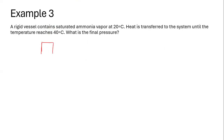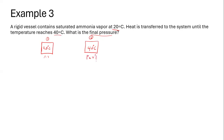In state number one the temperature was 20 degrees Celsius. After transferring heat into this system the temperature increased from 20 degrees Celsius to 40 degrees Celsius. What they want us to calculate is the final pressure — that means we want to determine the pressure at state number two, P2.